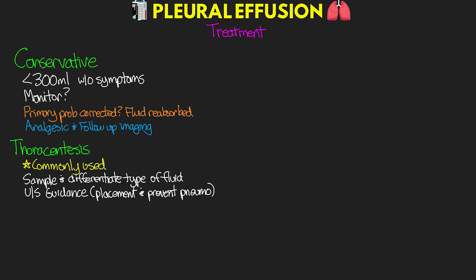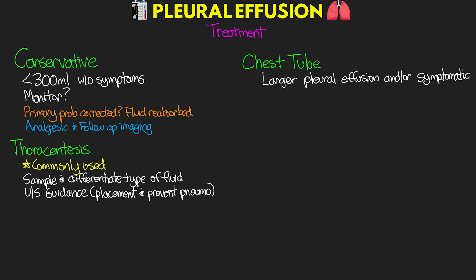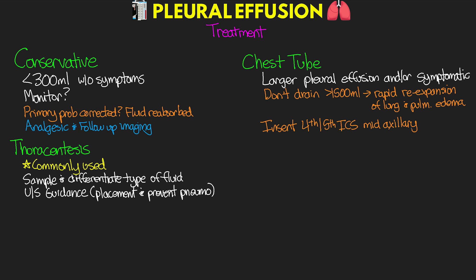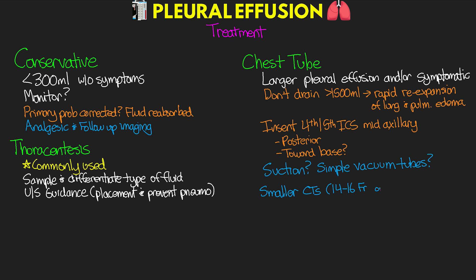For larger pleural effusions we often insert a chest tube. We need to be careful not to drain too much fluid initially — draining more than 1500 mL can lead to rapid re-expansion of the lung and potentially result in pulmonary edema. Chest tubes for pleural effusion are typically inserted at the fourth or fifth intercostal space, mid-axillary line, posteriorly and potentially downward toward the base of the lung to aid drainage. Suction may or may not be used, and sometimes a simple vacuum tube is used for collection. Pleural effusions typically use smaller chest tubes — 14 to 16 French — as well as small bore pigtails in the 10 to 14 gauge range.